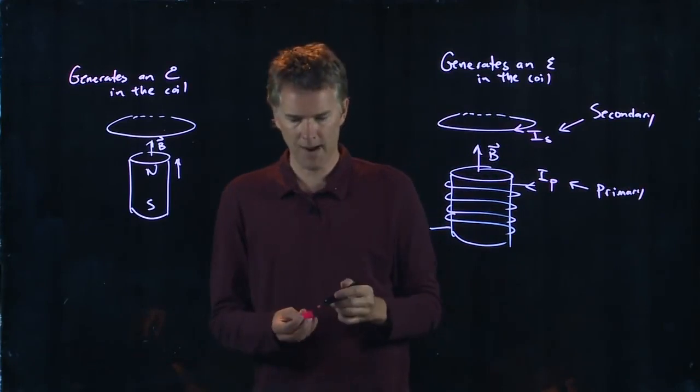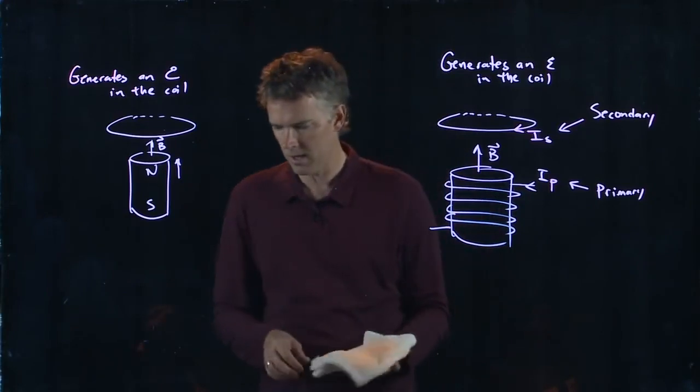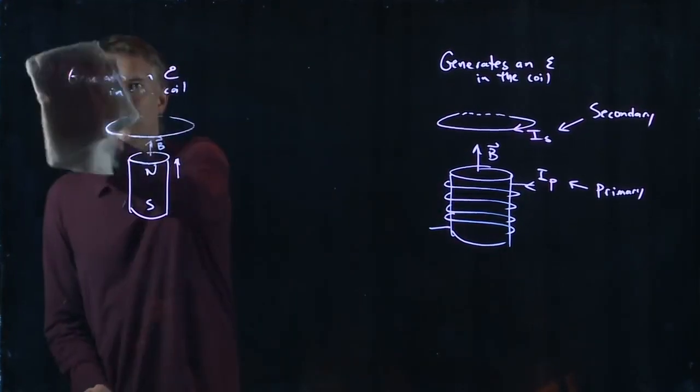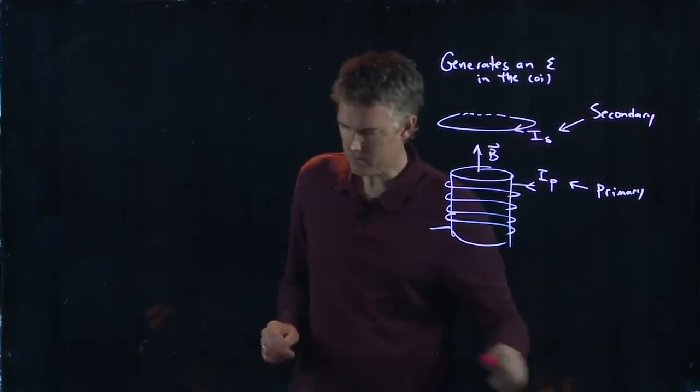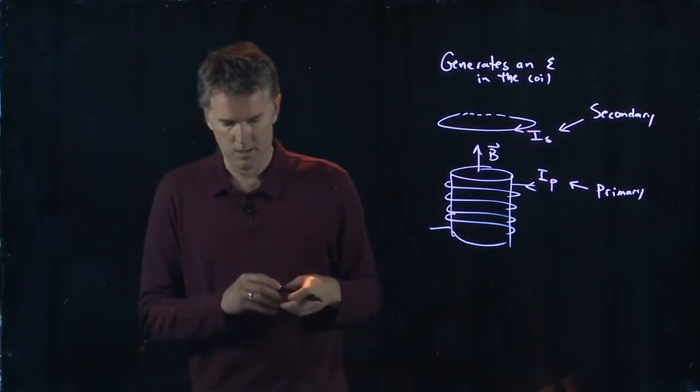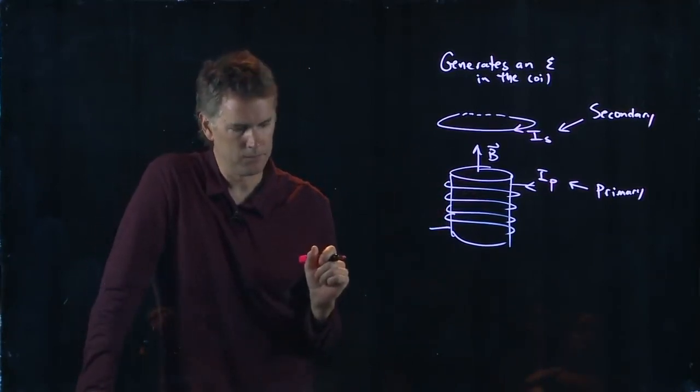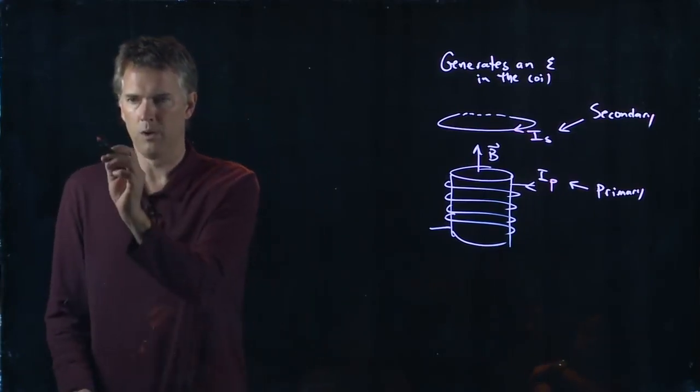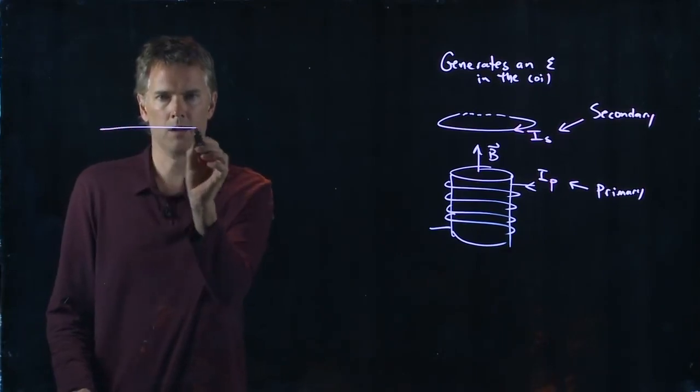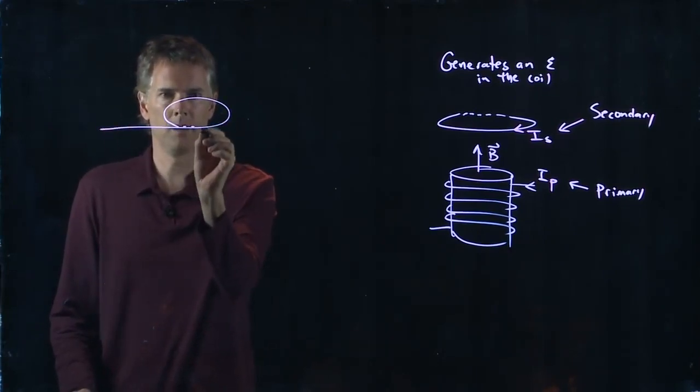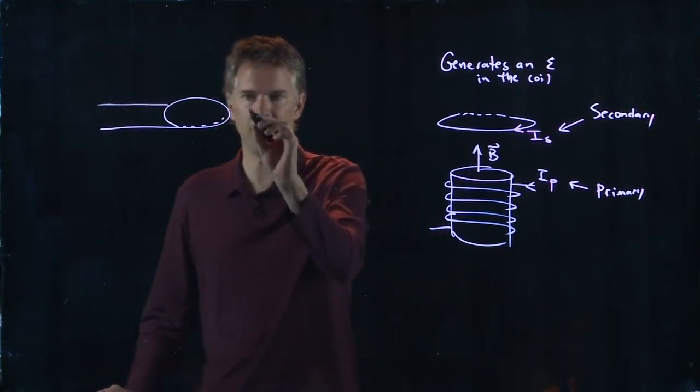But is there any reason that I just need to have one coil there? No, not at all. I can do many coils up there. But let's think about the following. Instead of doing that, let's do just one coil to simplify everything. So I'm going to make one coil like so. And it's going to come back around and we're going to call that our secondary coil.